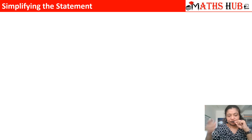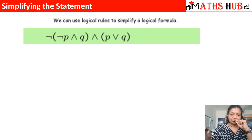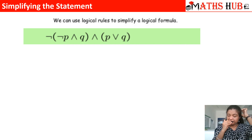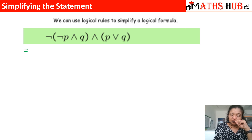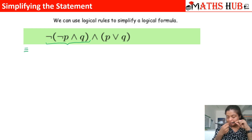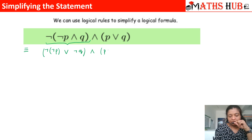Now let us simplify the first expression: negation(negation P AND Q) AND (P OR Q). Always apply one law at a time to avoid errors. In the first step, we can apply De Morgan's law to the negation of (negation P AND Q), which gives negation(negation P) OR negation Q, combined AND with (P OR Q). So applying De Morgan's law gives us: (negation(negation P) OR negation Q) AND (P OR Q).